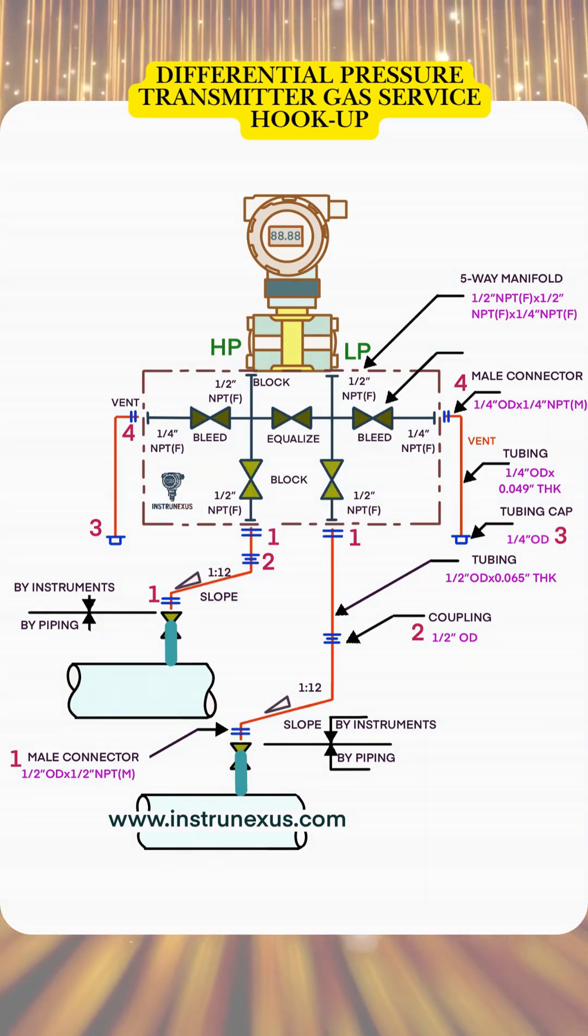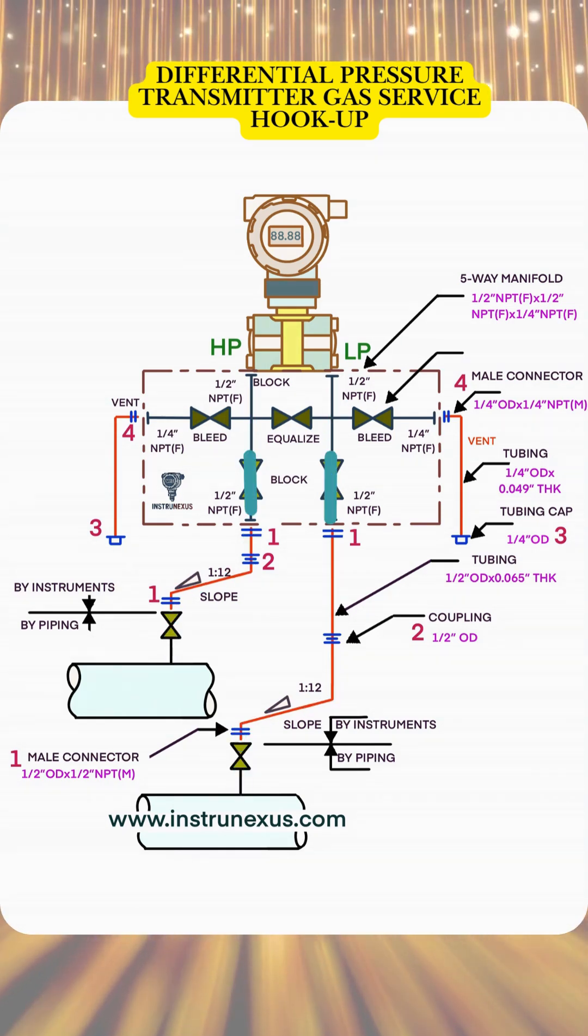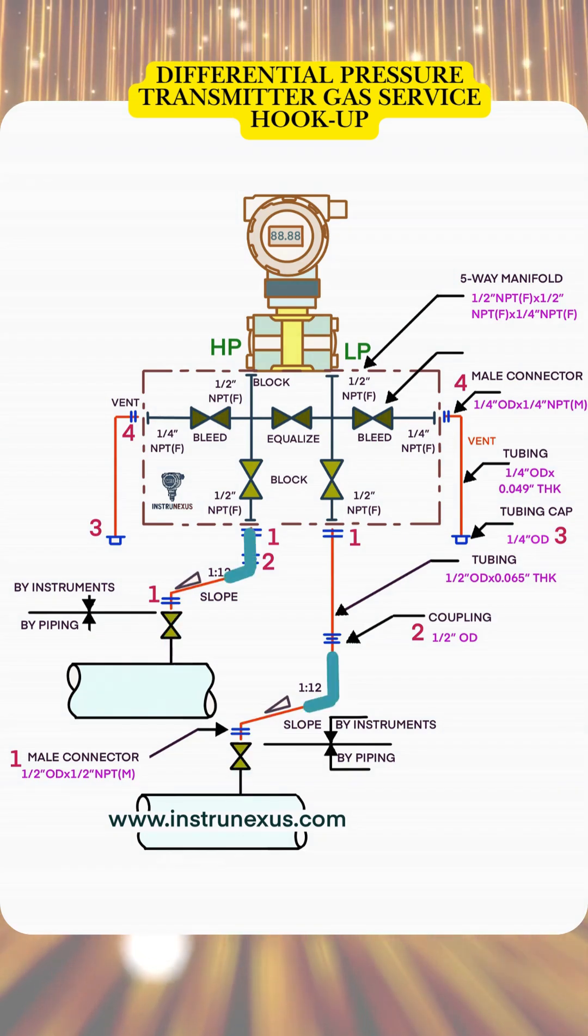The manifold includes two block valves to isolate the transmitter, one equalizing valve to balance the pressure, and two bleed valves for venting and calibration.